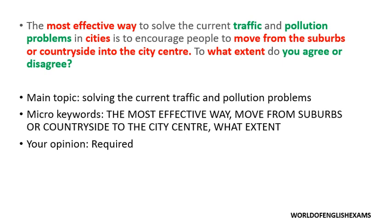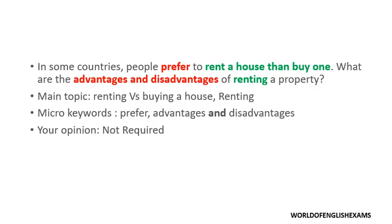Let's examine this question: 'In some countries, people prefer to rent a house than buy one.' Here comes the confusing part — I have seen students confused between THAN and THEN. Let me clarify: THAN is a comparison; THEN is the result. THAN is a comparative word. So here, it is about the preference for place to live — whether renting a house or buying one — and the preferred choice of people in some countries is renting over buying.